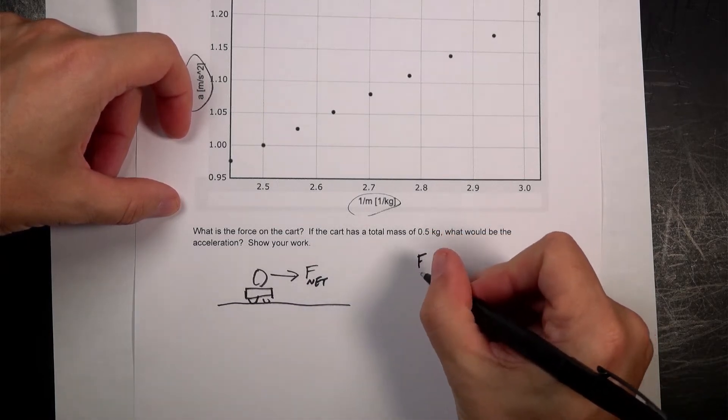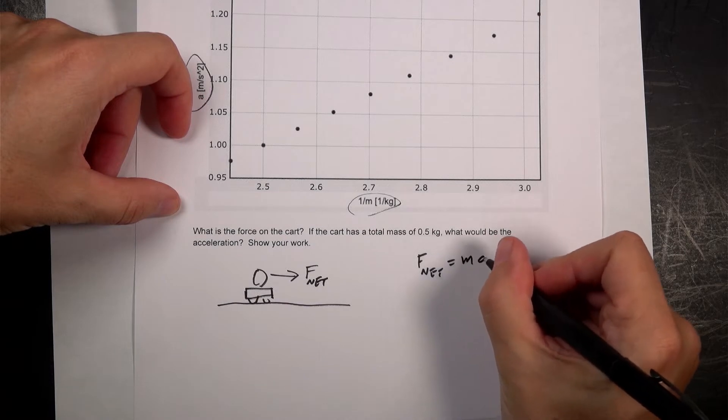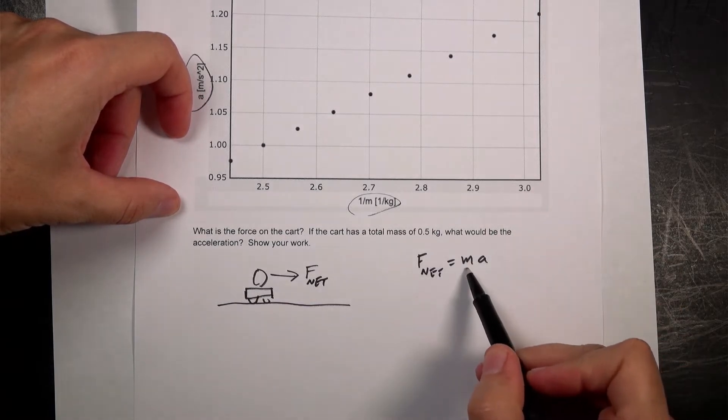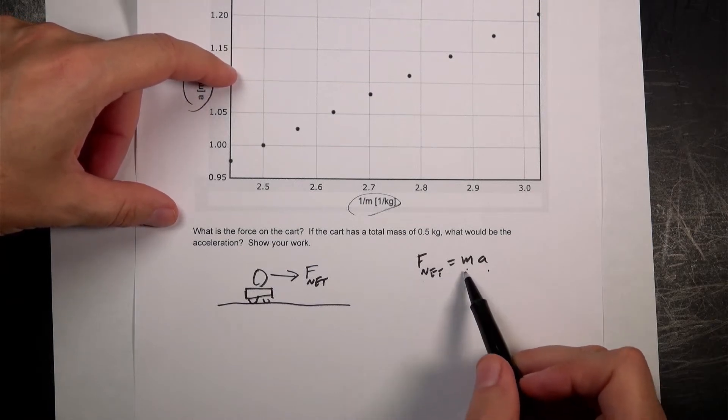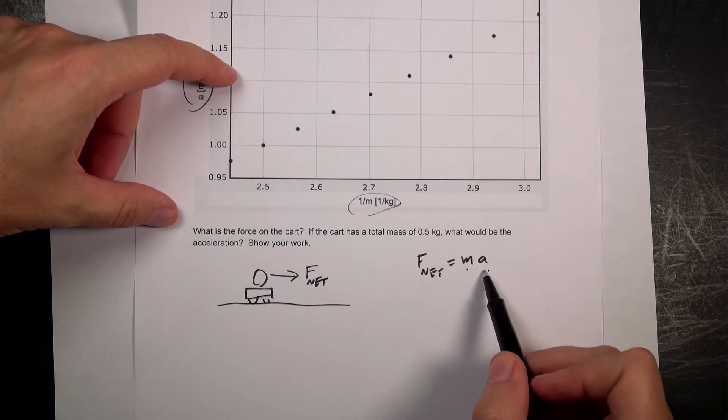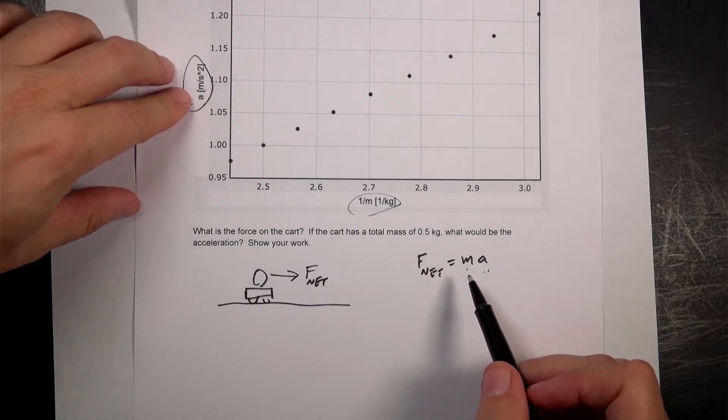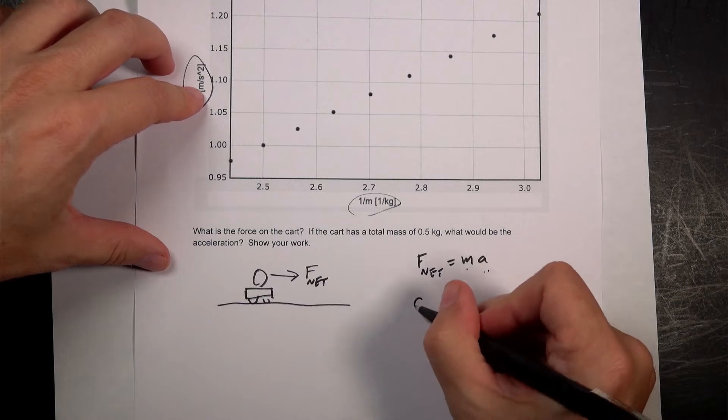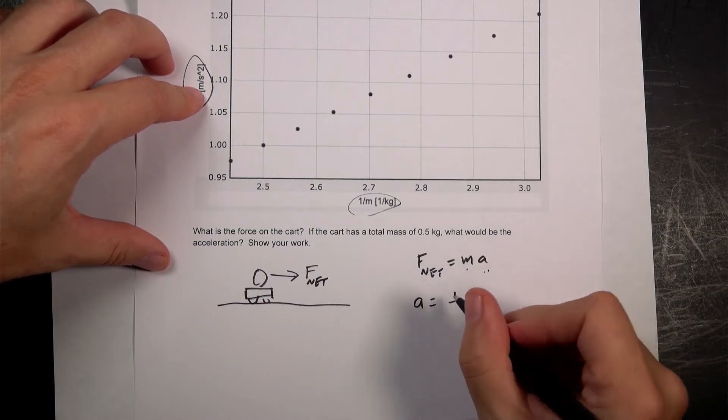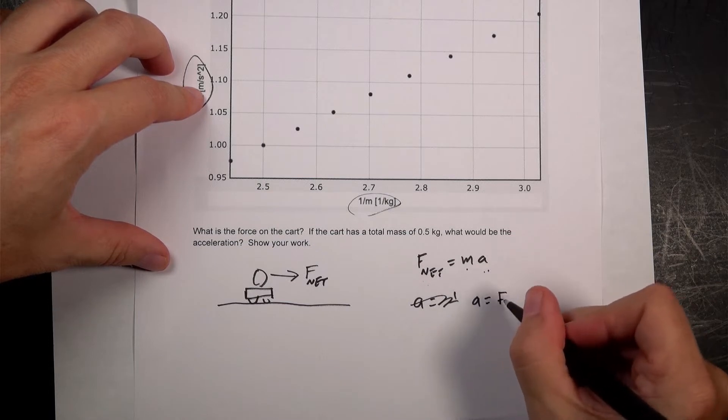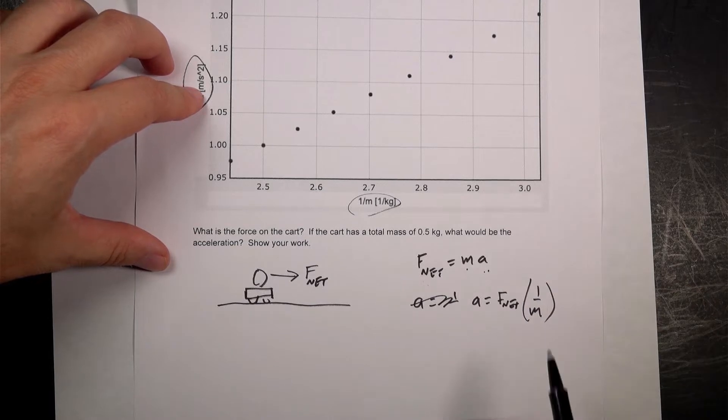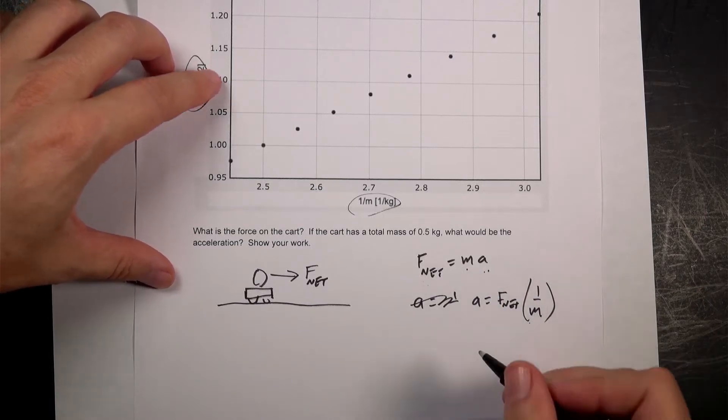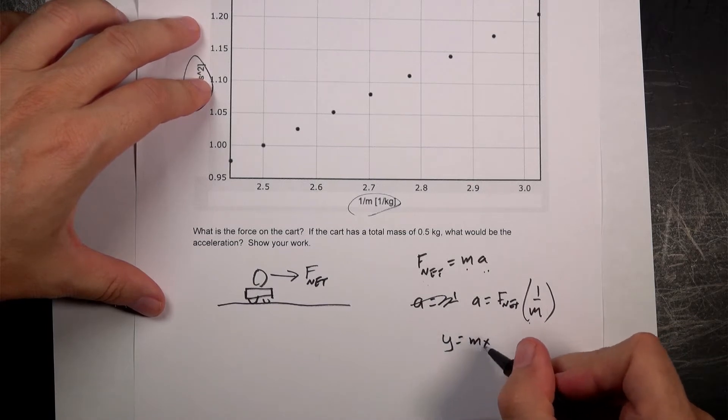Newton's second law says F net is equal to MA. So what I'm going to do is change the mass and measure the acceleration. Always keep that constant. So instead I want to get A and M on different sides of the equation. So right here I have A on the vertical axis. So let's solve this for A. So I can say A equals, actually I'm going to write it like this, A equals F net times 1 over M.